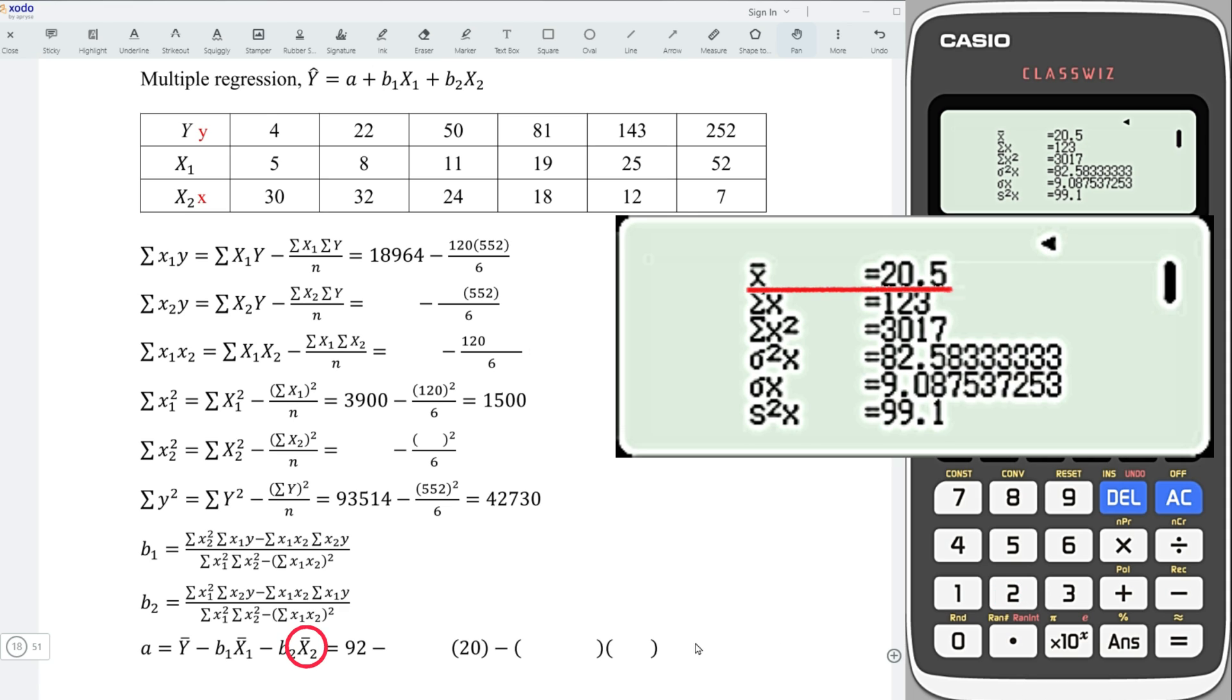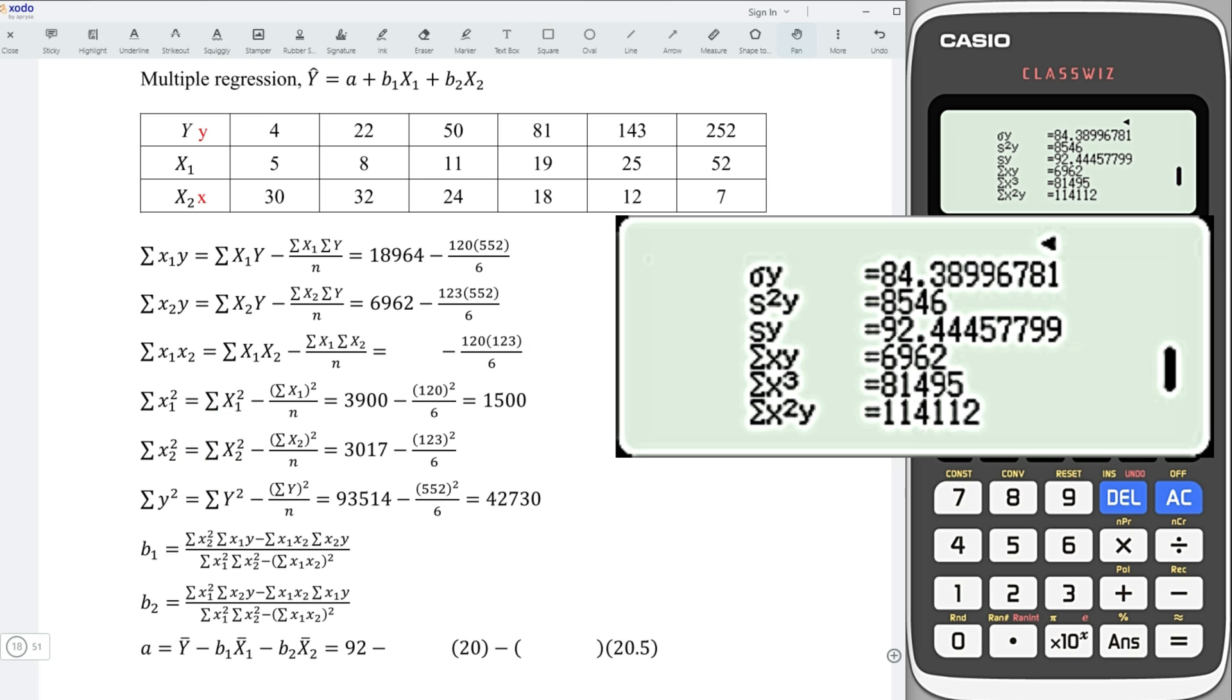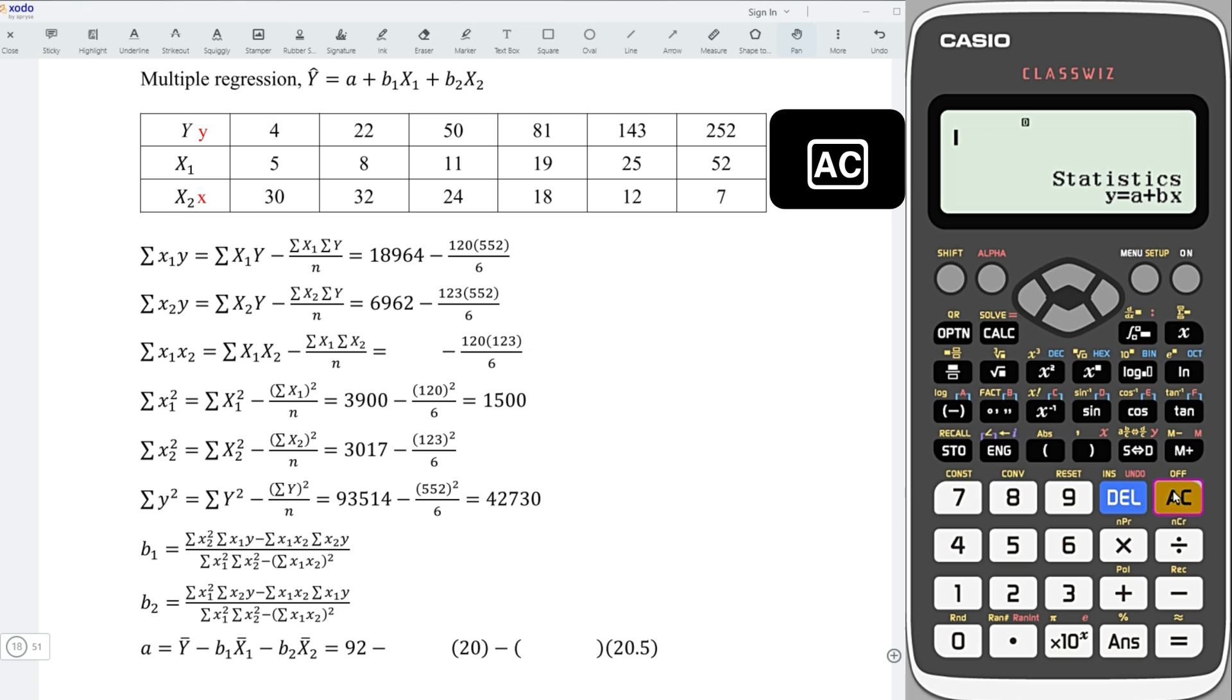We need the mean value, the summation x, and summation x-squares. Down, and down, to obtain the summation of xy.